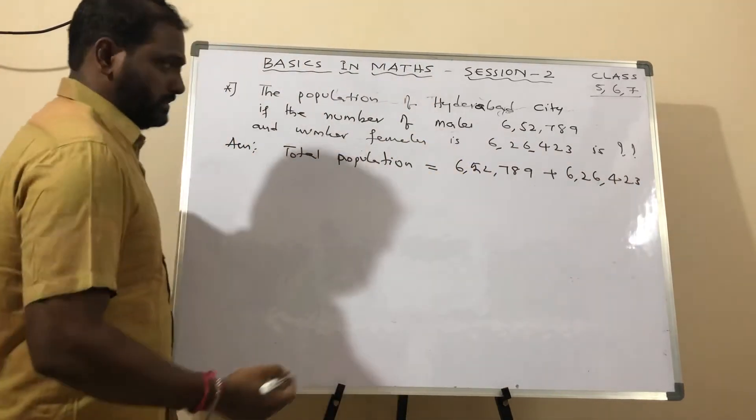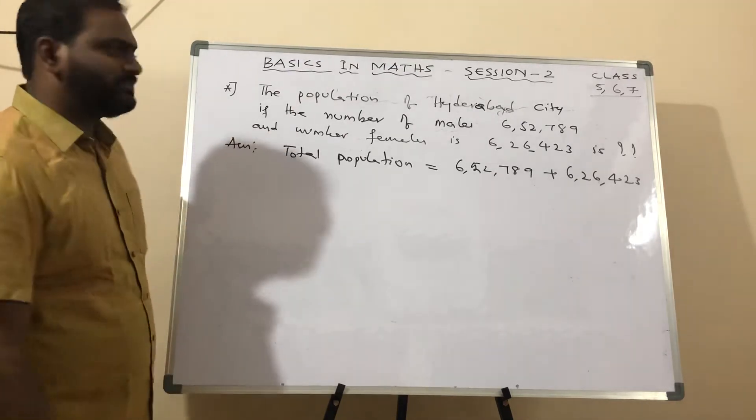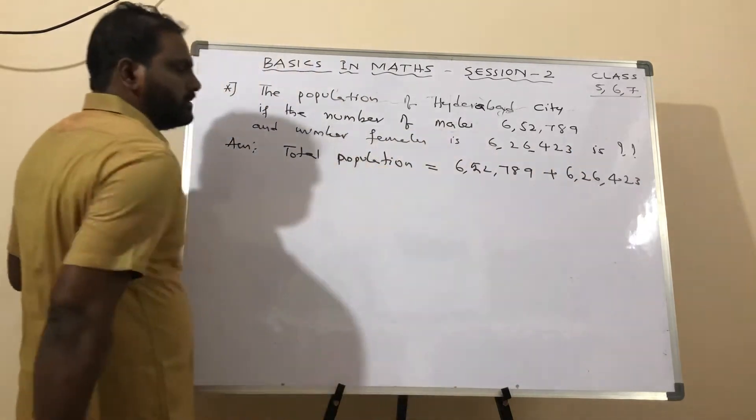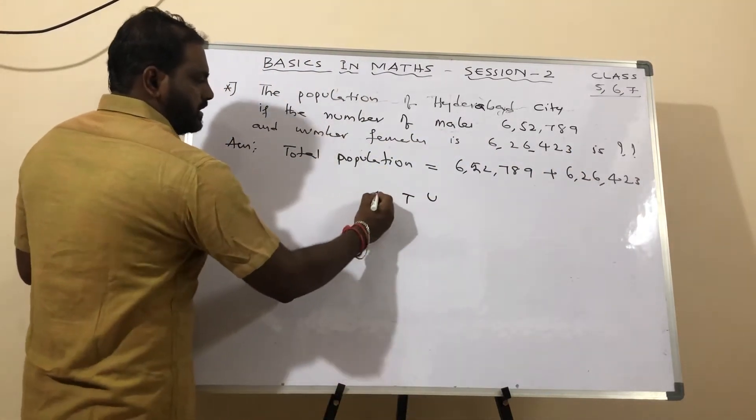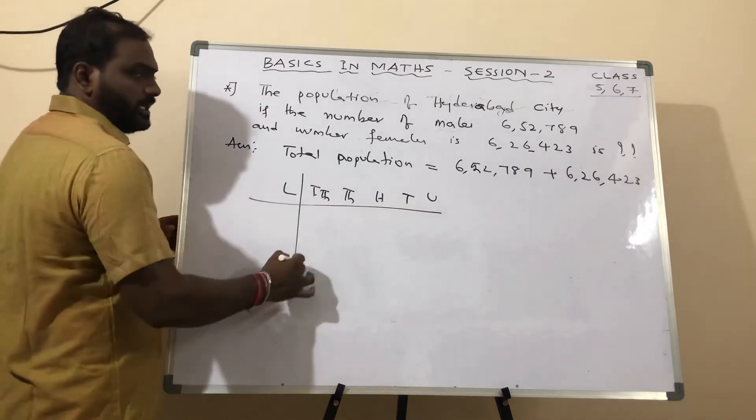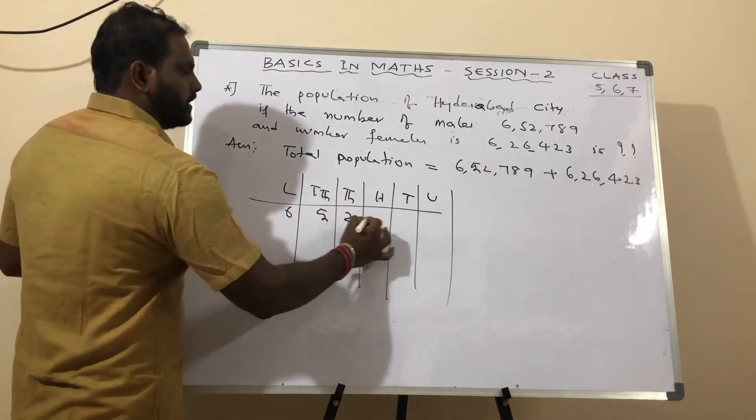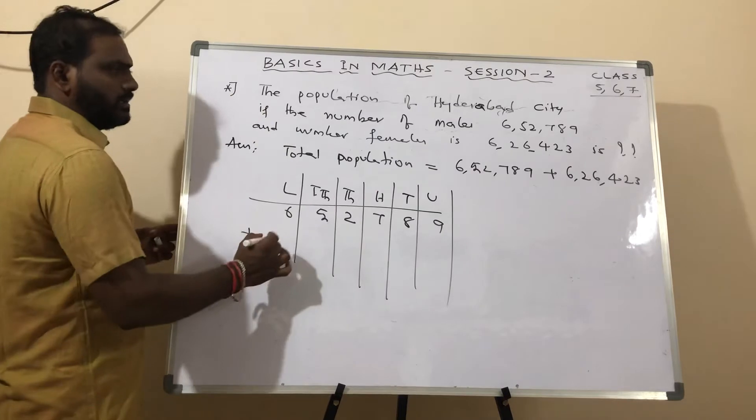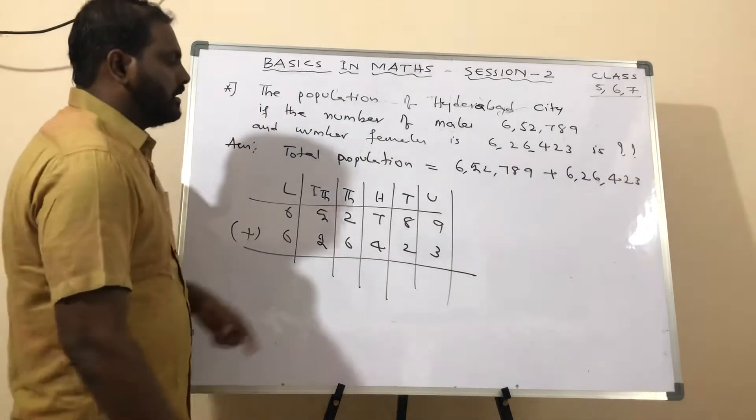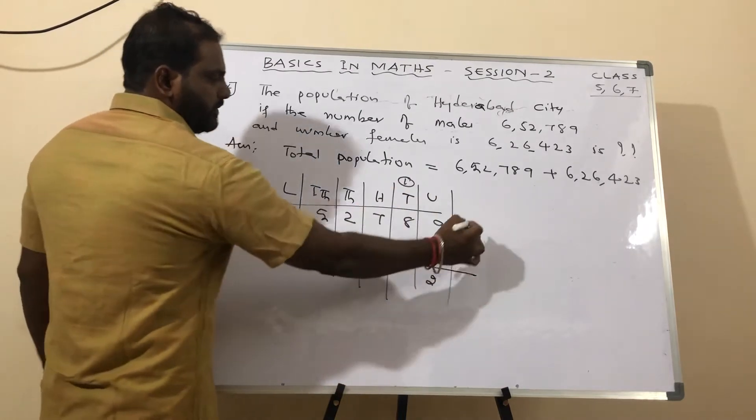Total population is equal to 6,52,789 plus 6,26,423. I am not counting children because it's a rough sum for our calculation purpose. Now we are doing both. Units, tens, hundreds, thousands, ten thousands, and lakhs. Draw the lines and write: 9 plus 3 is 12, so 2 should be written here and 1 carried out.